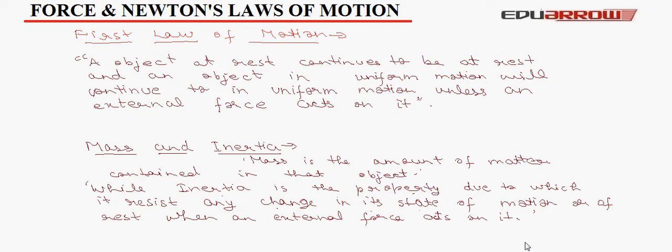It is a common observation when we are in a stationary bus and the bus suddenly starts, then we tend to fall backward. This is due to the fact that our legs which are in contact with the bus moves with the bus, but our body which has inertia tends to fall backward because it wants to remain at rest because it has inertia. So, we fall backward.